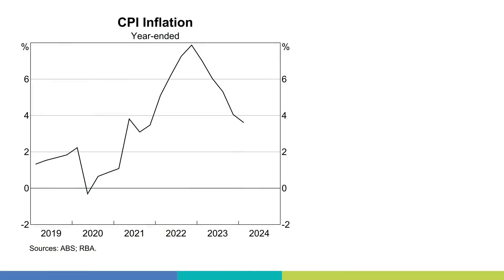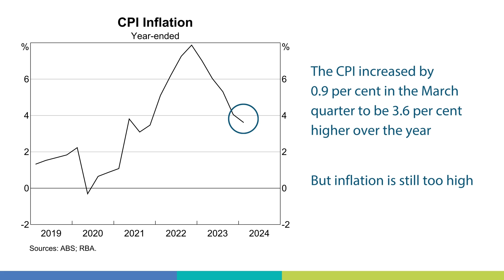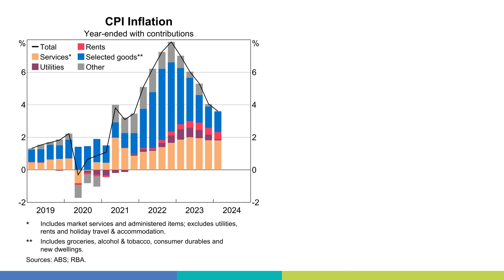We will now focus on inflation. The Consumer Price Index or CPI increased by 0.9% in the March quarter to be 3.6% higher over the year. This is down from 4.1% in the December quarter but is still too high. Let's drill down into how different factors have contributed to inflation. Note that headline inflation captures all prices in the CPI basket, including some prices that are volatile from quarter to quarter.